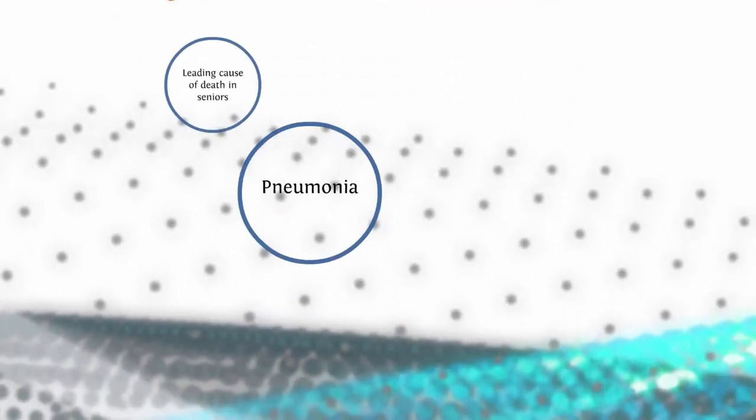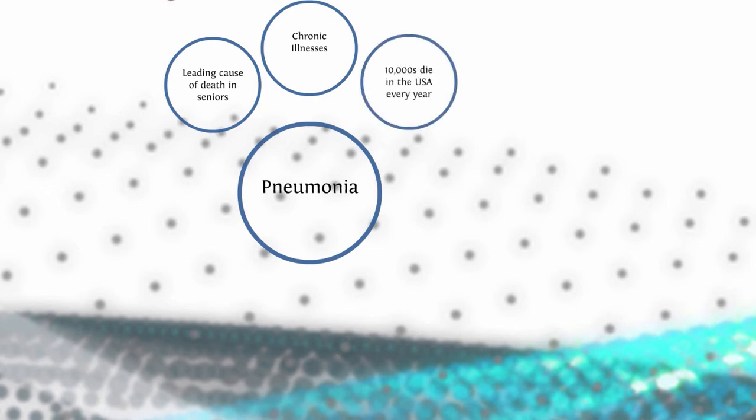Pneumonia is the leading cause of death in seniors and people with chronic illnesses. That's not to say that other people can't get pneumonia, but these two groups are at the highest risk for contracting pneumonia. Just so you have a better idea of what that means, tens of thousands of people die every year in the U.S. alone from contracting pneumonia, and there are millions more who are infected with it every year.